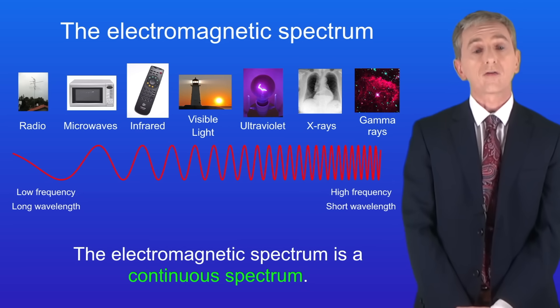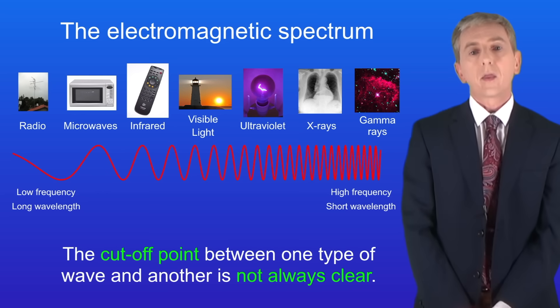Scientists say that the electromagnetic spectrum is a continuous spectrum. That means that the cutoff point between one type of wave and another is not always clear.